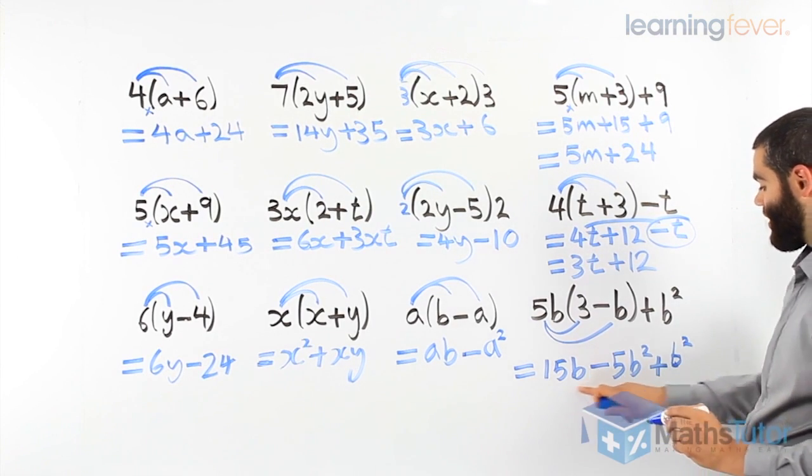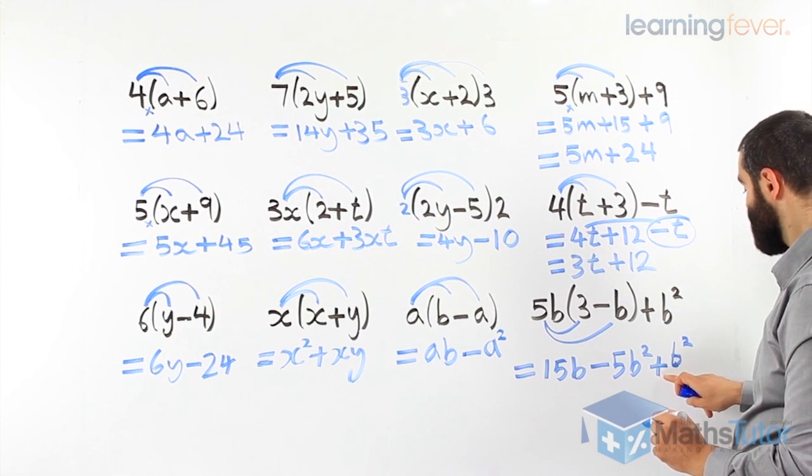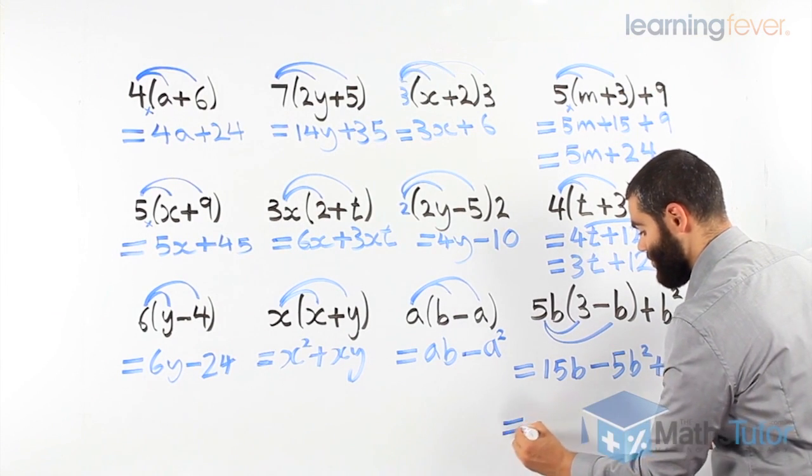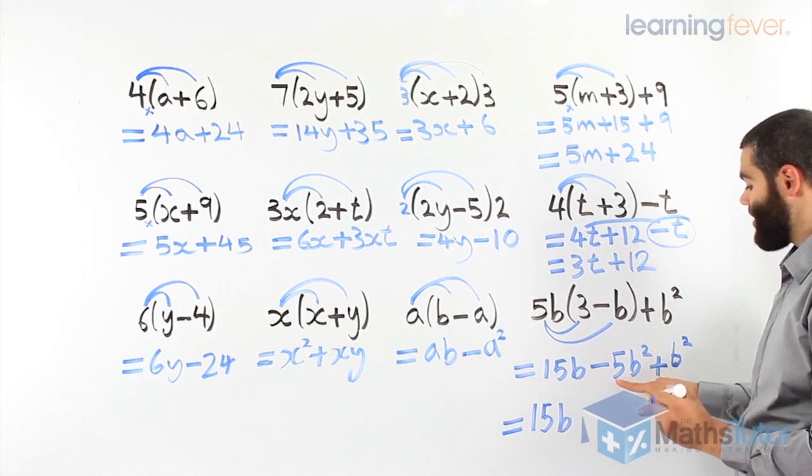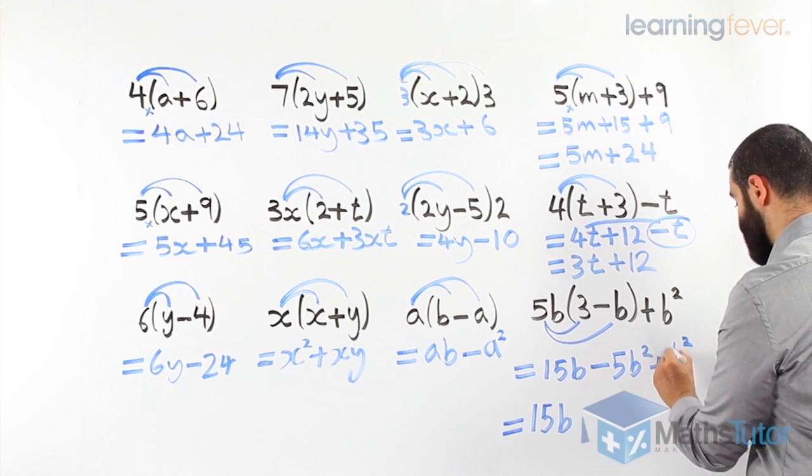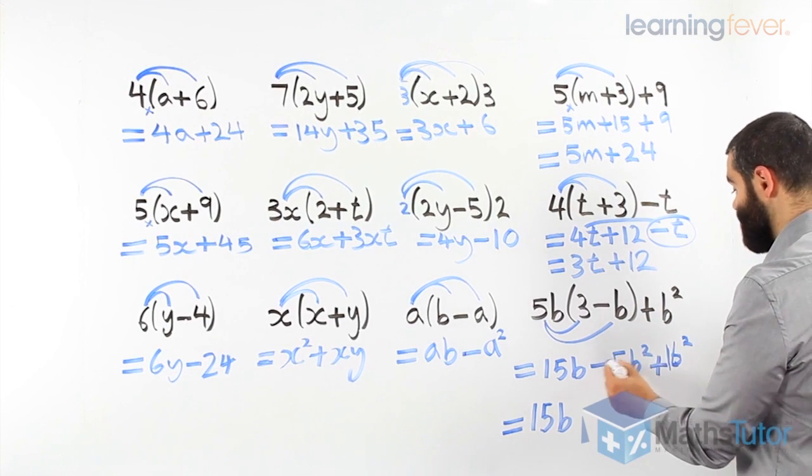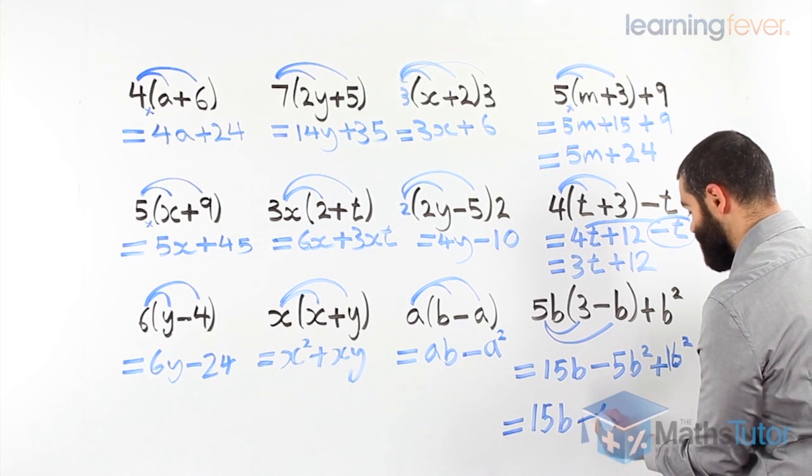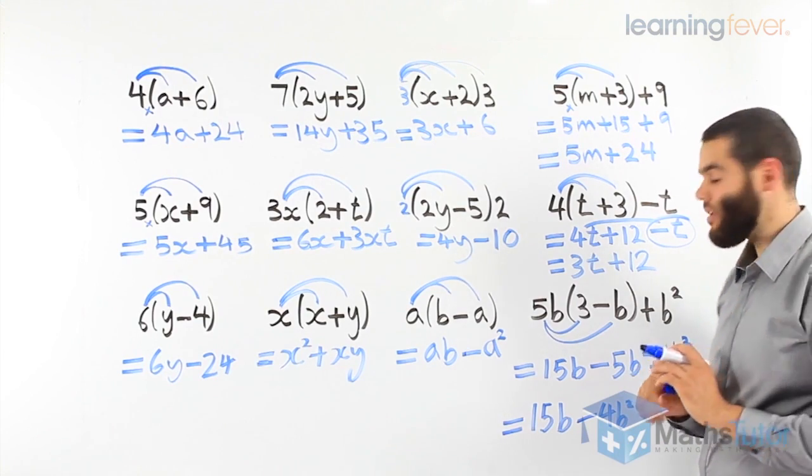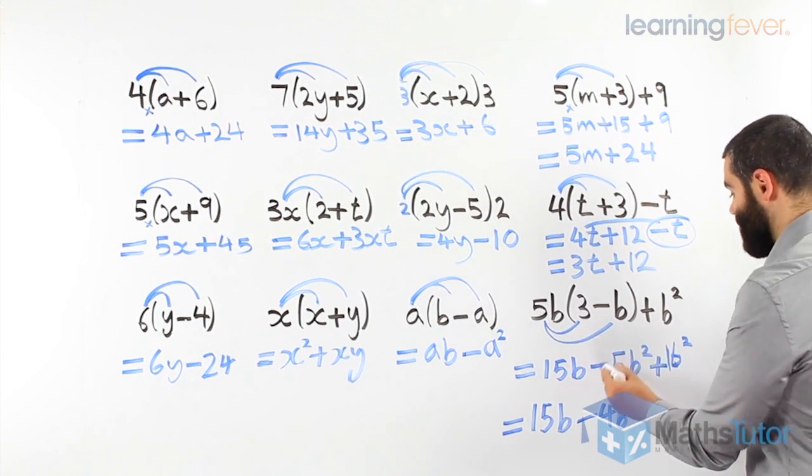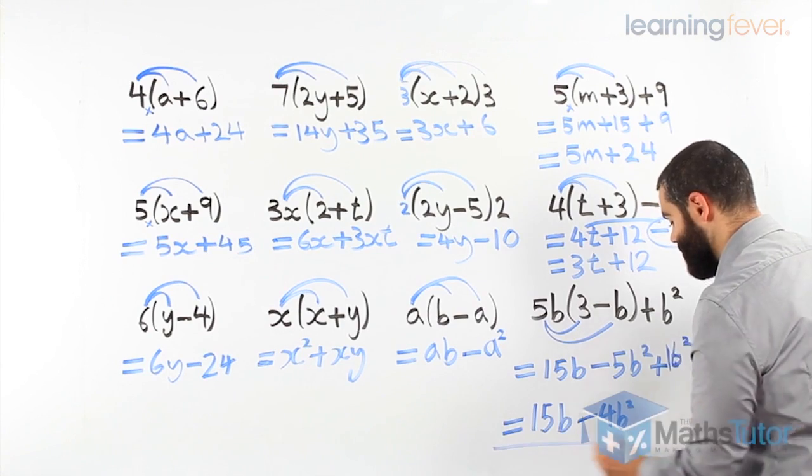Now we can tell, do we have any like terms? We have a b here, a b squared, and a b here, b squared there. 15b, minus 5. And we know there's a 1 there. Because b squared really is a 1b squared, but the 1 is invisible. Minus 5 plus 1 is minus 4b squared. Negative numbers, and the tricks with negative numbers, we actually use in algebra as well. Negative 5 plus 1 is negative 4b squared. This is our final answer there.